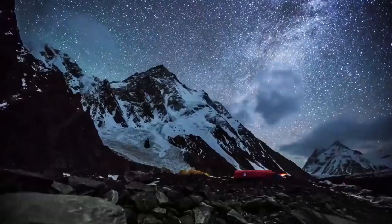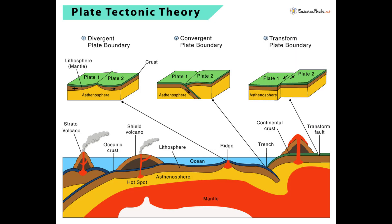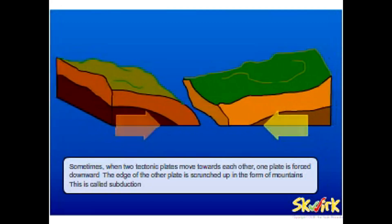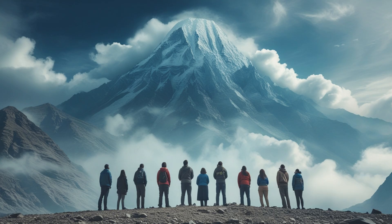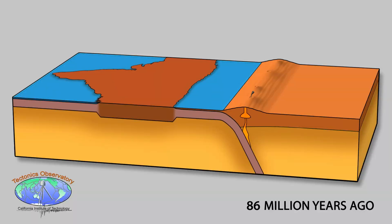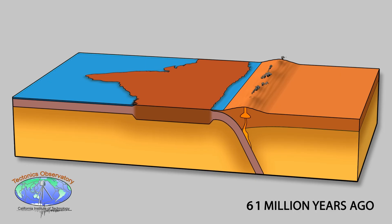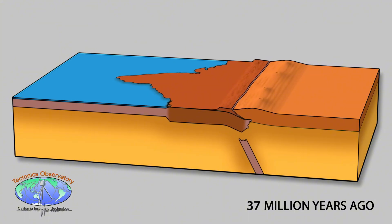Mountains are the result of colossal forces occurring beneath the earth's surface. The main source of these forces is plate tectonics — the earth's crust is divided into different plates. These plates, over millions of years, collide, slide under each other, or move apart, forming mountains. These collisions push continental crust upwards, creating massive mountain ranges. Continental plates move under oceanic plates, lifting the ocean floors. That's how gigantic mountain ranges like the Himalayas were born.